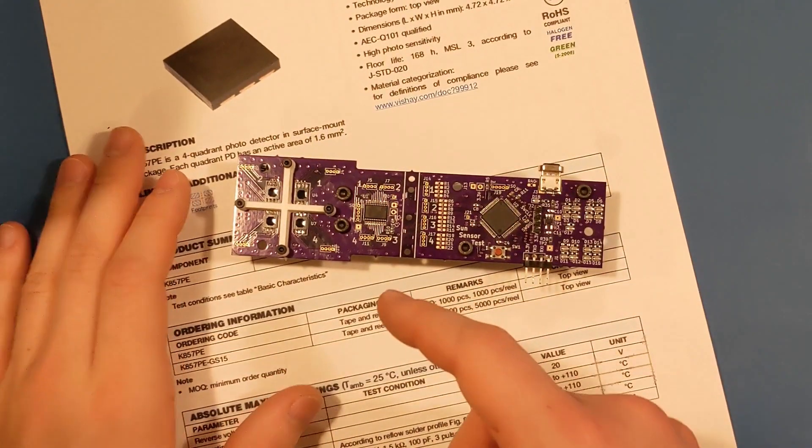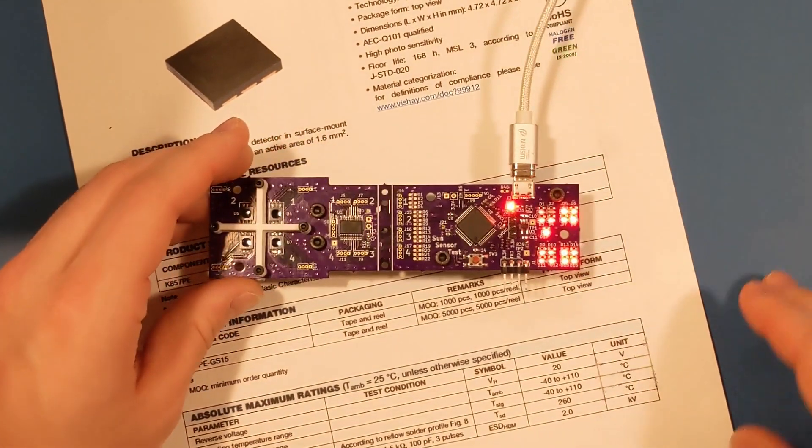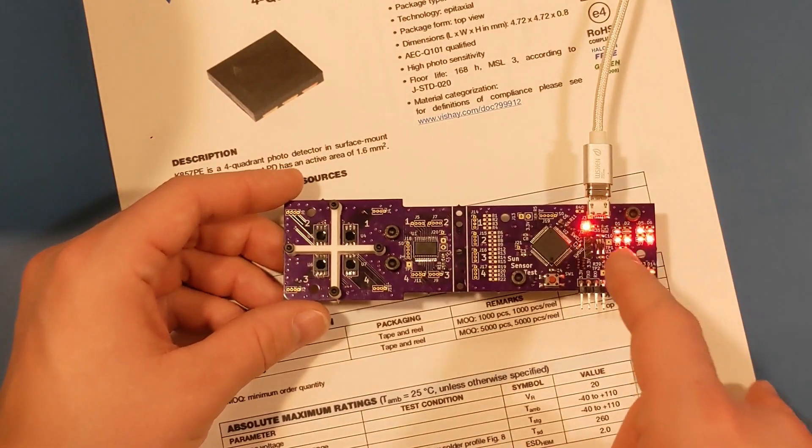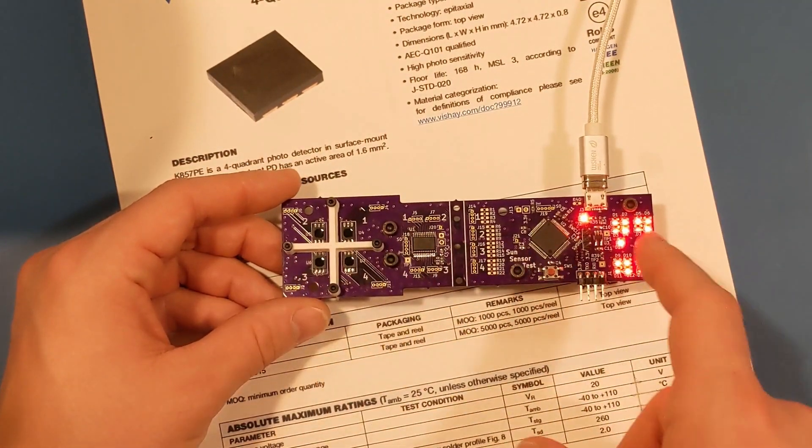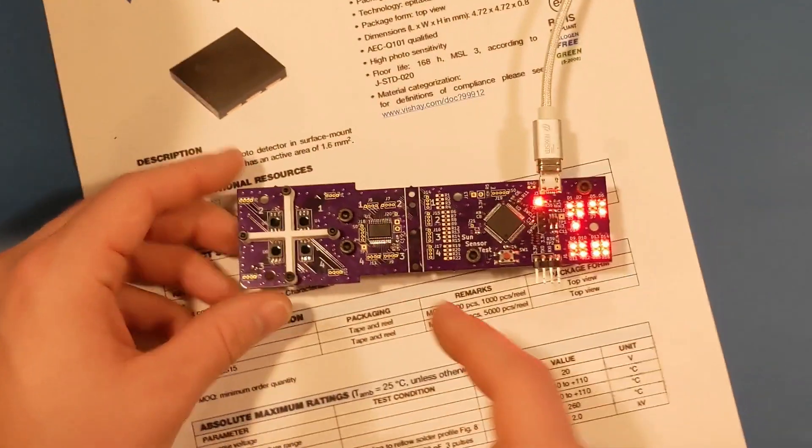To show you that the sensor does somewhat work, let me connect power to it. And you can see all these LEDs light up here. These LEDs correspond to these photodiodes. So these LEDs, these four map to these four photodiodes, that sort of thing.